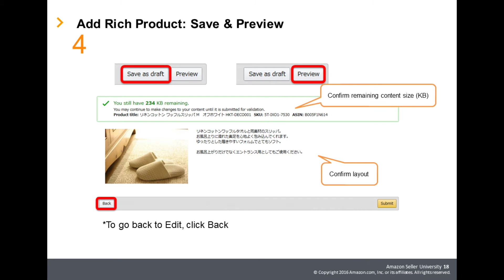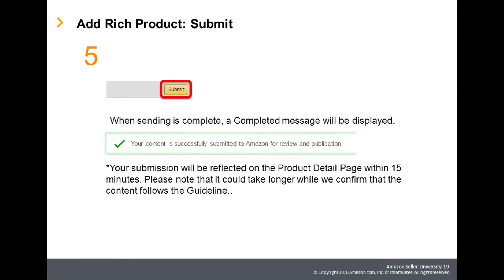Before actually reflecting to the product detail page, a preview can be confirmed. Click Preview to display the preview screen and confirm remaining content size. After all input is complete, click Preview to check that there are no mistakes in the display content, and click Send. The content sent will appear on the product description page within approximately 15 minutes. Please note that it may take a while to check that the content was created following the guidelines.